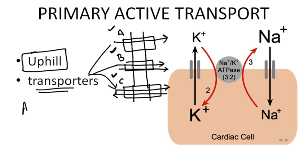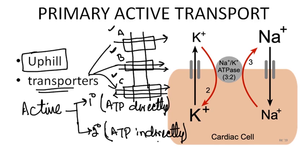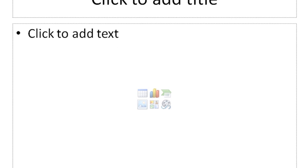Active transport is classified into two groups: primary and secondary. In primary active transport, ATP is used directly by the transporters. In secondary active transport, ATP is used indirectly — the actual transport does not use ATP directly, but another ATP-dependent process drives it.